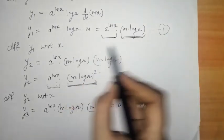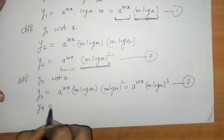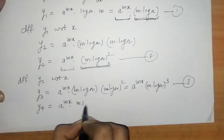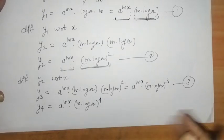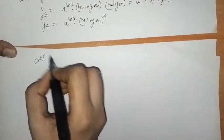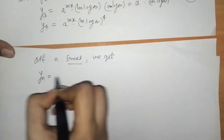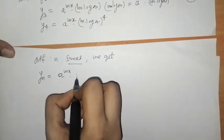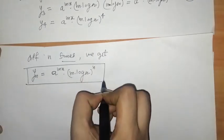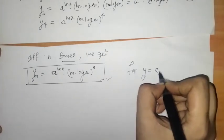So we have the first, second, and third derivatives following a clear pattern. By observation, the fourth derivative y4 equals a raised to mx into (m log a) raised to 4. Differentiating n times, we get yn equals a raised to mx into (m times log of a) raised to n. This is the nth derivative of the function y equals a raised to mx.